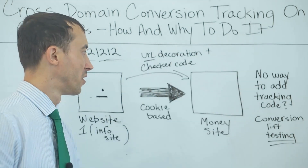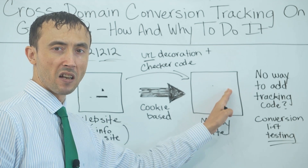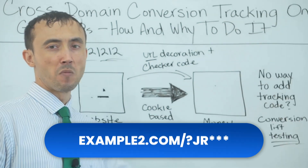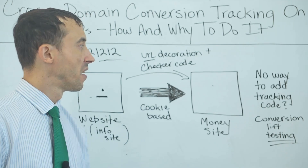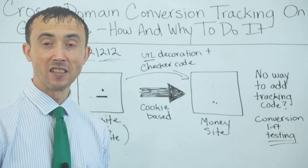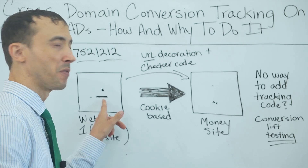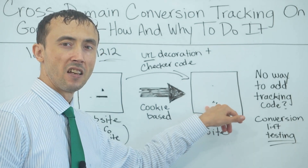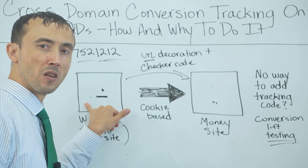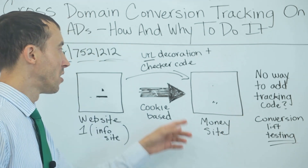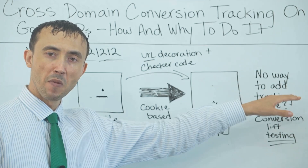The URL at the end — so if this was example2.com — when somebody gets to example2.com from the link on your initial site, it's going to say example2.com?_jr= with a coded bit of extra stuff added to the end of the URL. That code is a signal to the secondary money site that when they come through, it can recognize it as somebody who came from the Google Ads campaign. Secondary checker code on the money site looks for traffic that also has the URL decoration. If it sees it, it knows the traffic came from a Google Ad and passes that conversion information back to the Google Ads account to complete the conversion loop.